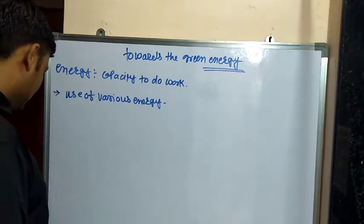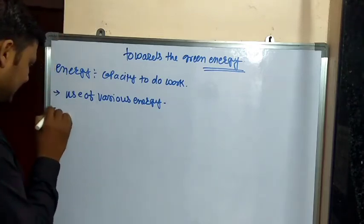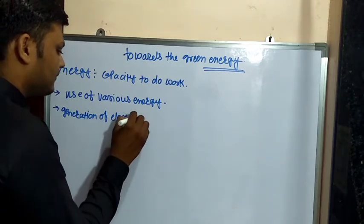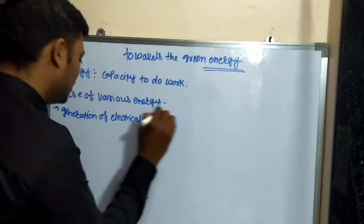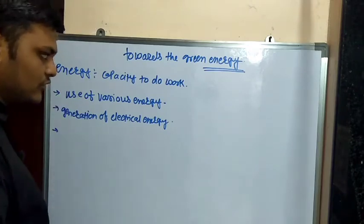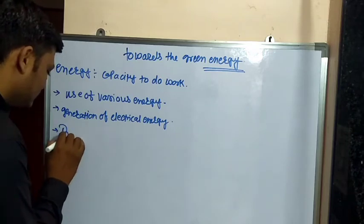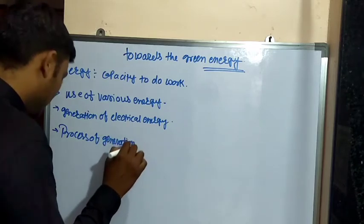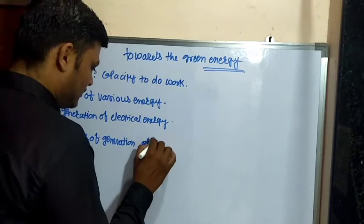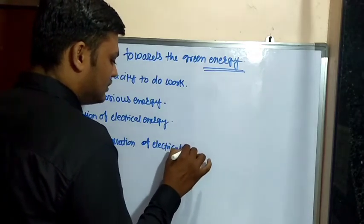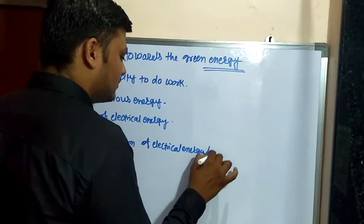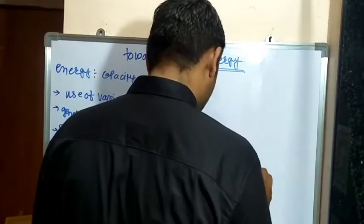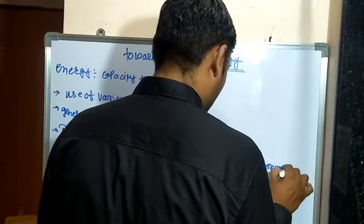So uses of various energy is the first topic. The second point we are going to discuss is generation of electrical energy. The third and last point we are going to discuss in this chapter is the process of generation of electrical energy and its relationship with the environment.